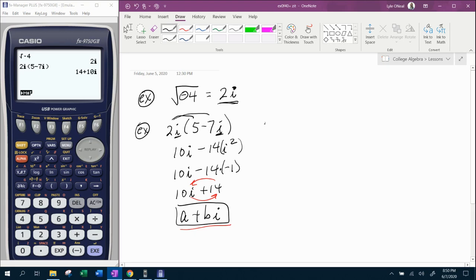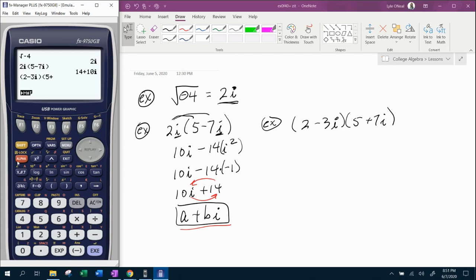And probably the coolest thing about having a calculator that does this for you is if you have two complex numbers that have both a real and an imaginary part. For example, if you have 2 minus 3I times 5 plus 7I, this would require the FOIL method and combine like terms and replace I squared. There's a lot of junk going on. But with the calculator, you can simply type in the problem the way it looks,